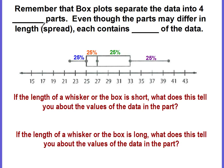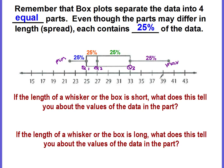Remember that box plots separate the data into four equal parts. Even though the parts may differ in length or their spread, each contains 25% of the data. From the minimum to Q1 represents 25%, from Q1 to Q2 (the median) is 25%, from Q2 to Q3 is another 25%, and from Q3 to the maximum represents 25% as well.